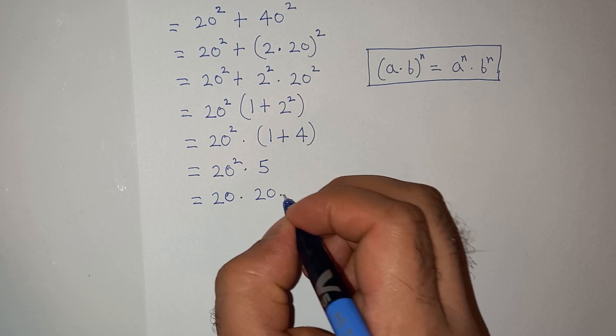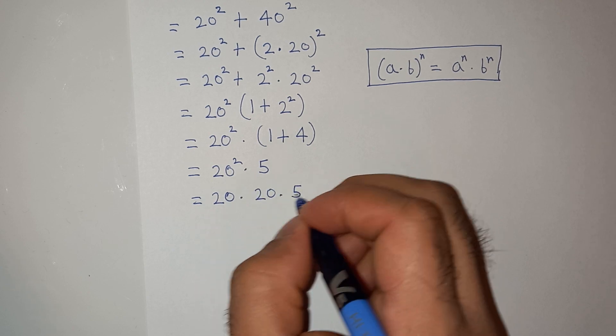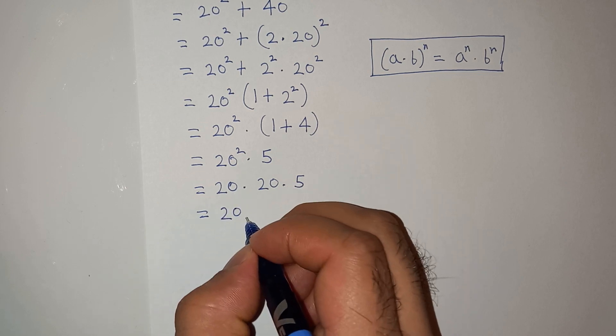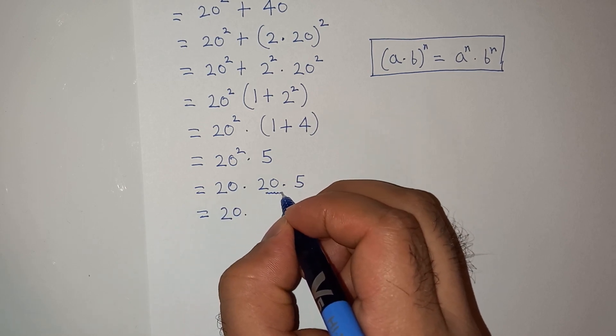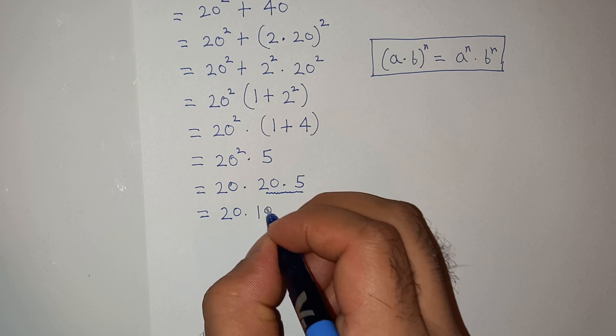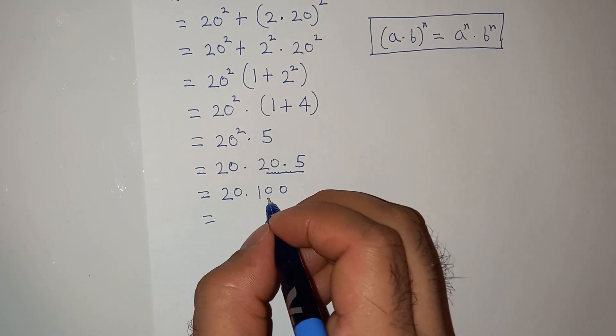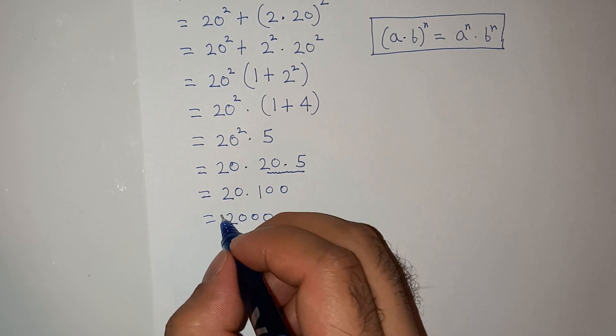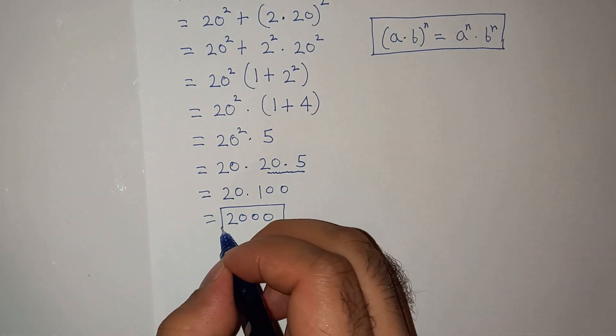So this will be 20 multiplied by, this 20 multiplied by 5 is 100, and we know that 20 multiplied by 100 is 2000. So this is our final answer.